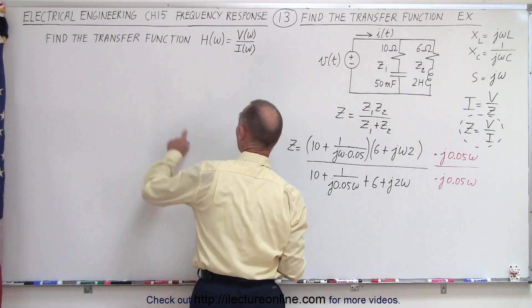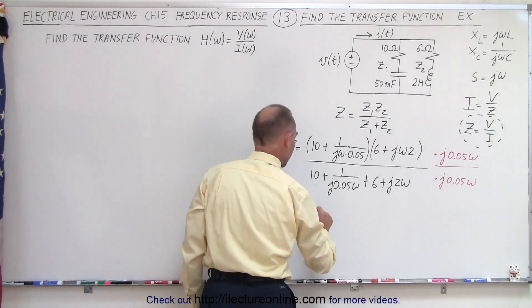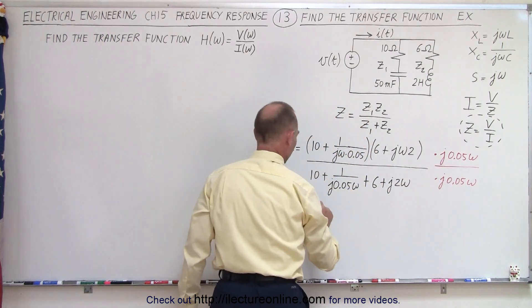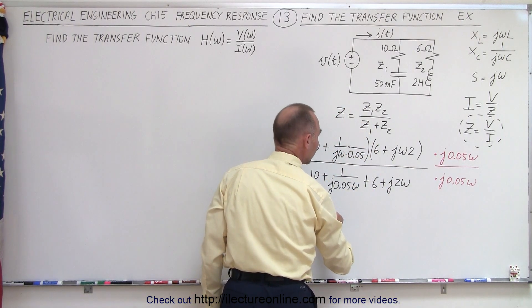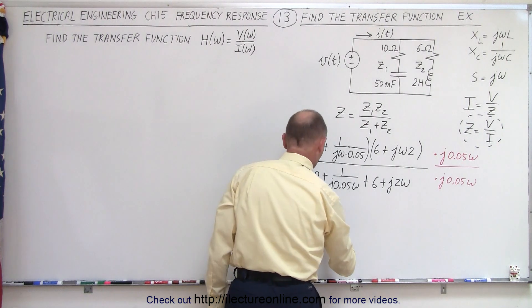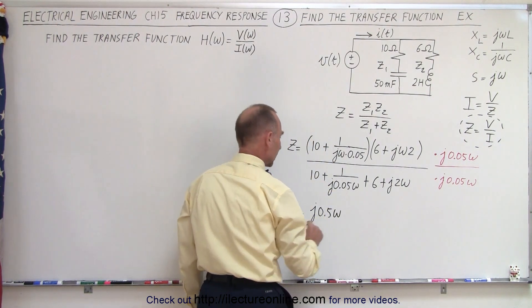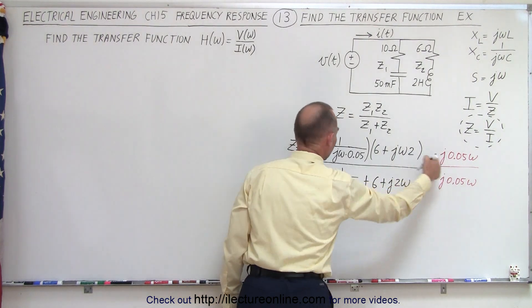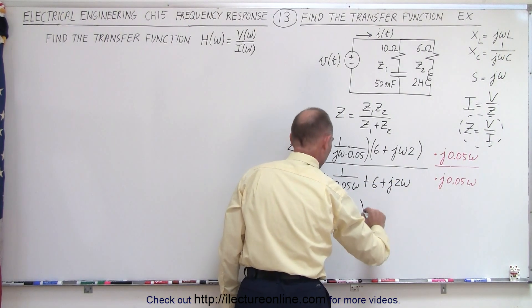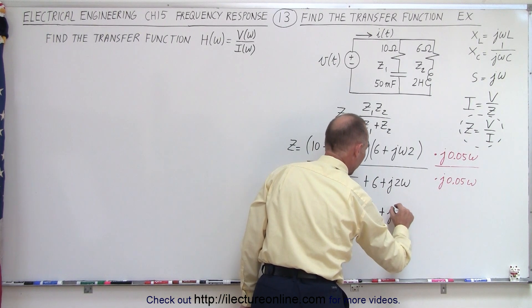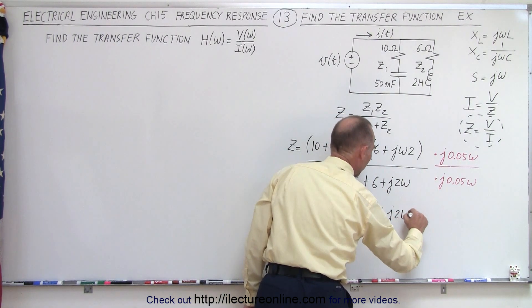Let's do that for both the top and the bottom to see what would happen. So, the impedance, which eventually is going to be the transfer function, is going to be equal to 10 times this, which is J times 0.05 omega, plus, multiply this times this, I get 1.